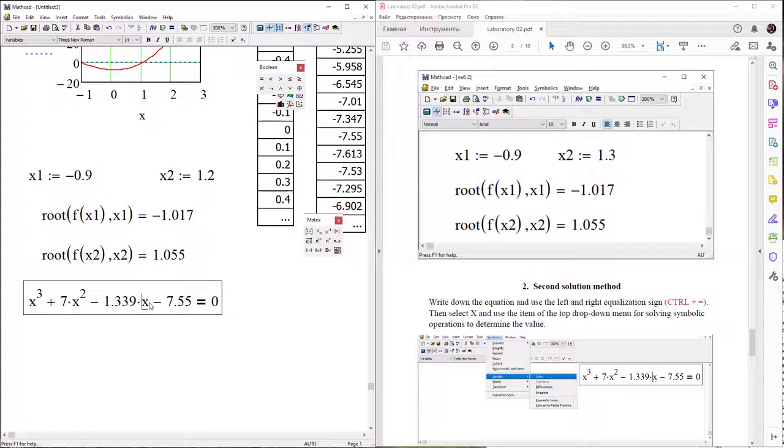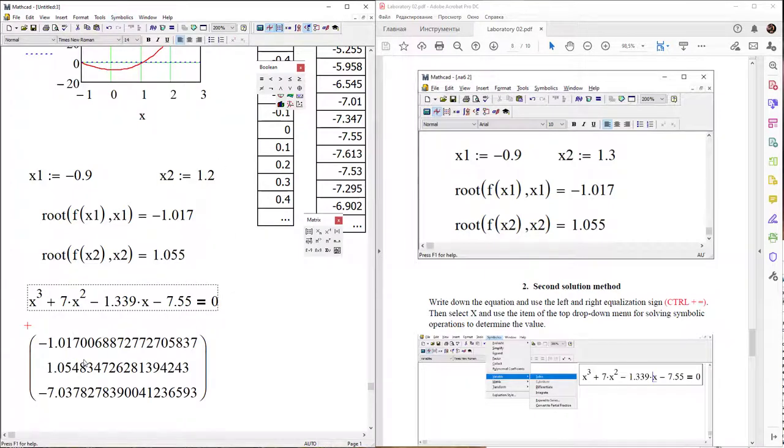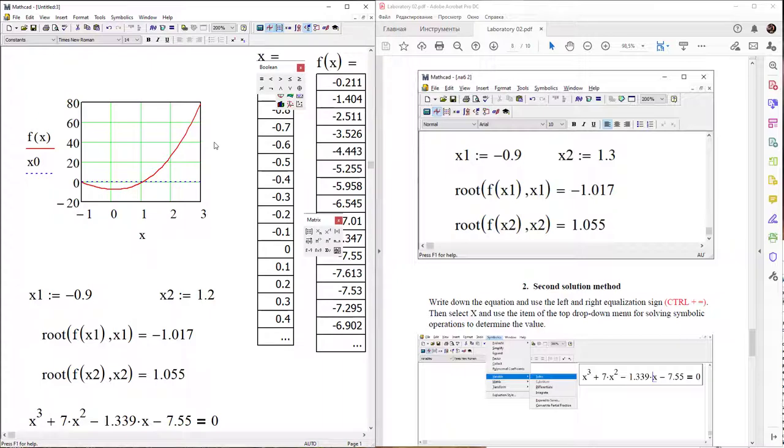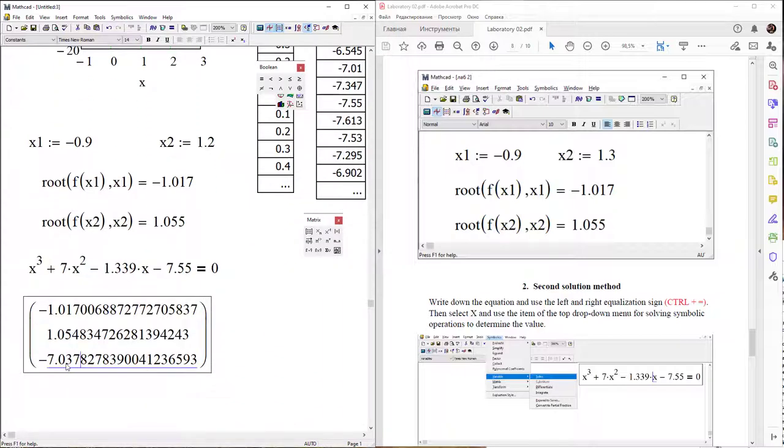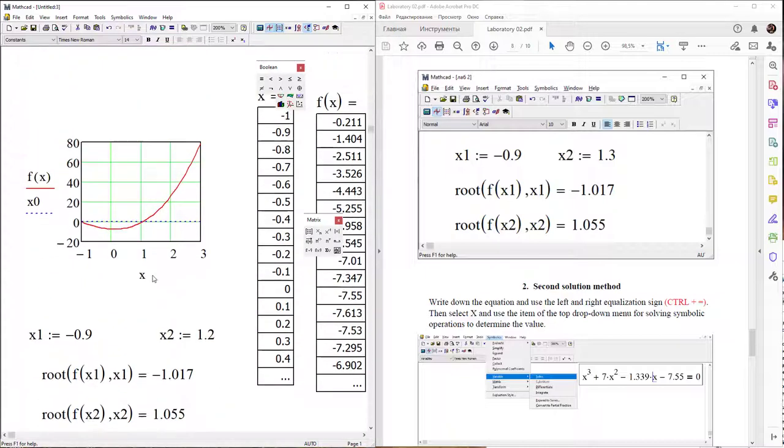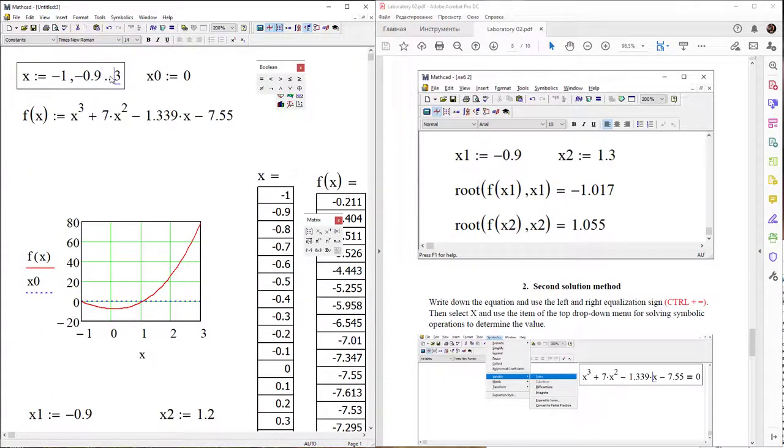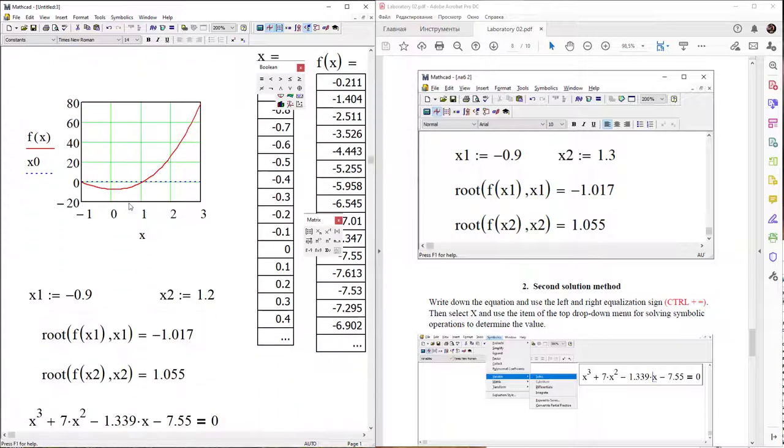After that, select x and use drop-down menu symbolic variable solve. We see three roots: first root minus 1.017, second root 1.055, and visually we can't find the third root minus 7 because the range of finding our roots is from minus 1 to 3.